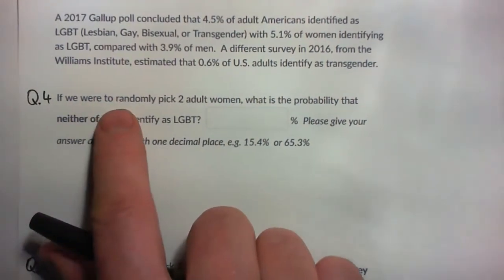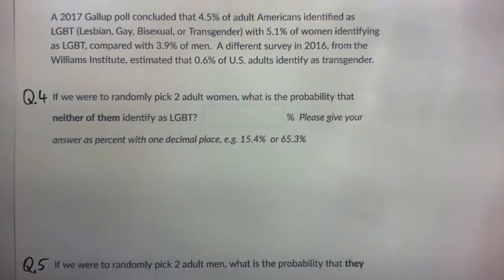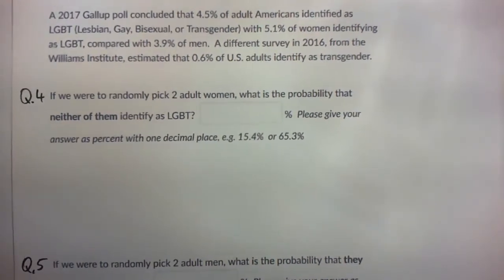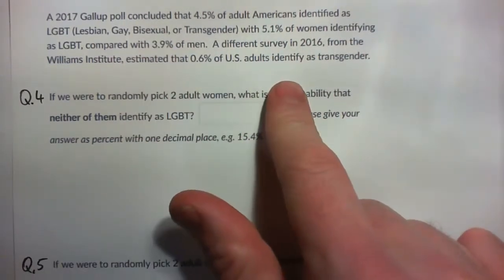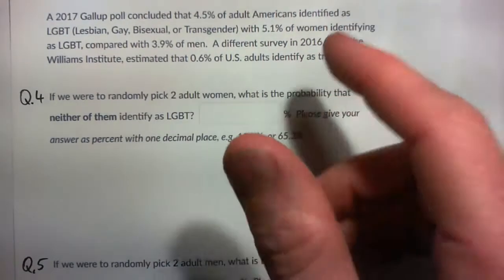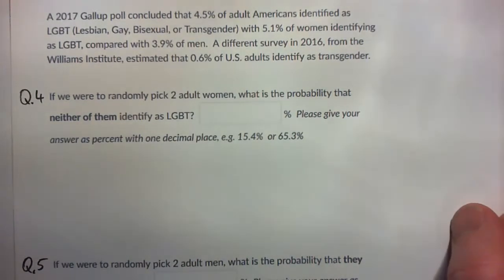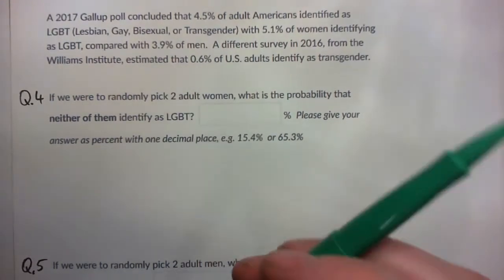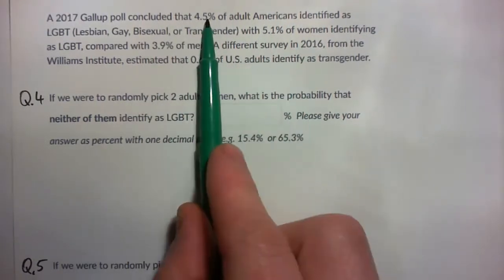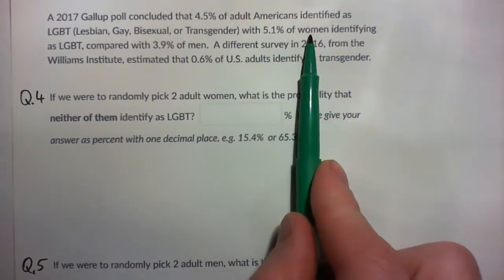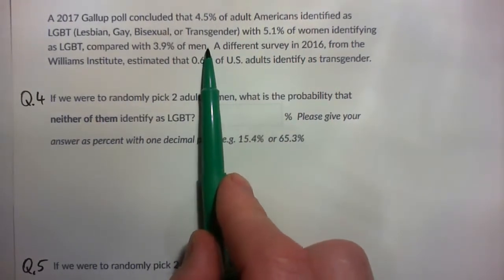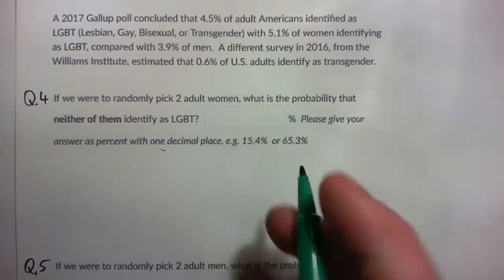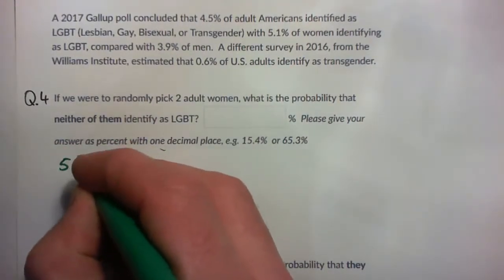Question 4: if we were to randomly pick two adult women, what is the probability that neither of them identify as LGBT? Please give your answer as a percent with one decimal place. Which percentage do we need for this question? This is 4.5% of adult Americans, this is 5.1% of women, and 3.9% of men. Since we're asked about adult women, we use the 5.1%.